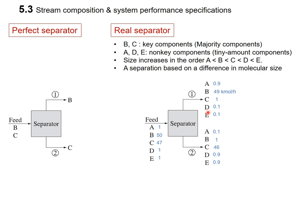Let me check the amount of each stream. The most dominant component in stream 1 is B at 49 kilomol per hour. There are very tiny amounts of A, D, and E, which are non-key components. More importantly, C — which was a majority component in the feed — appears in only a tiny amount in stream 1. This means we have successfully separated B from C, and even from A, D, and E. The main point is that B is separated from C, so our target material in stream 1 is the B component.